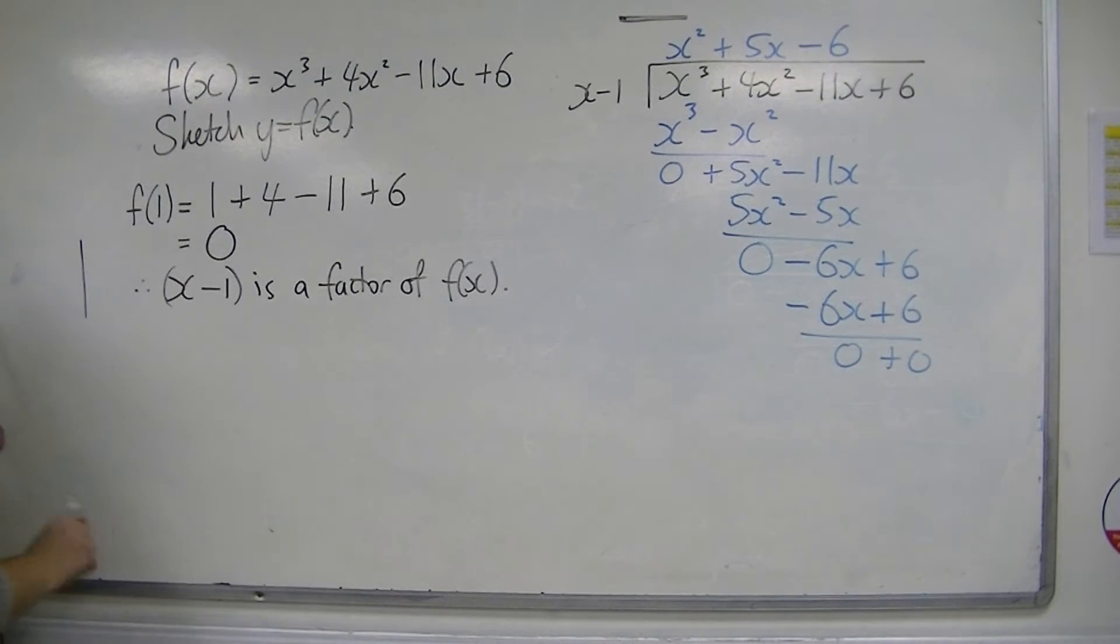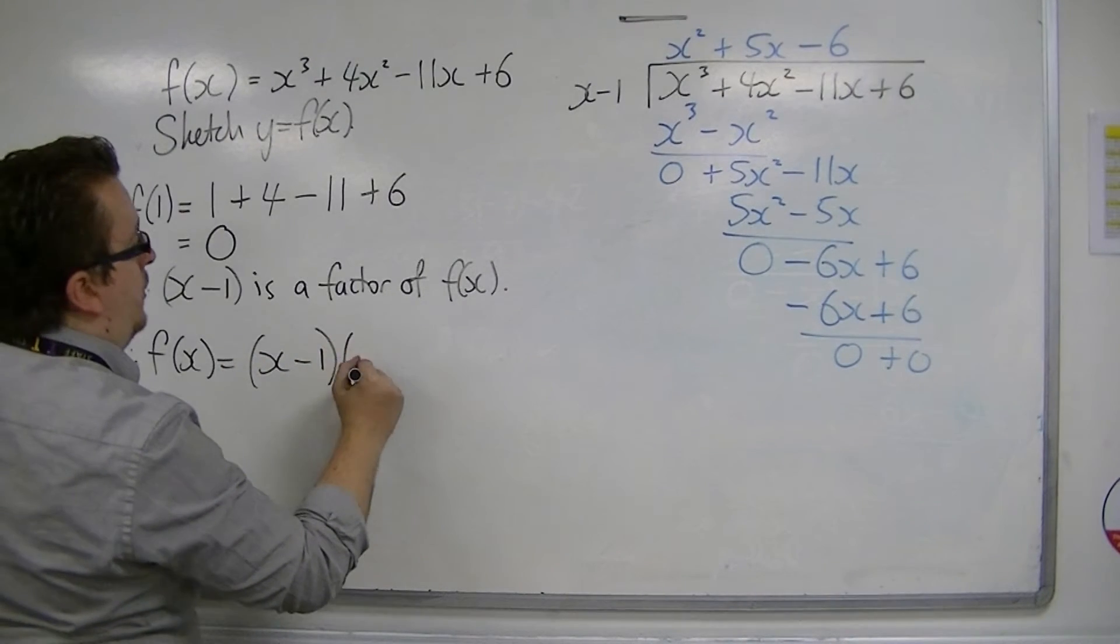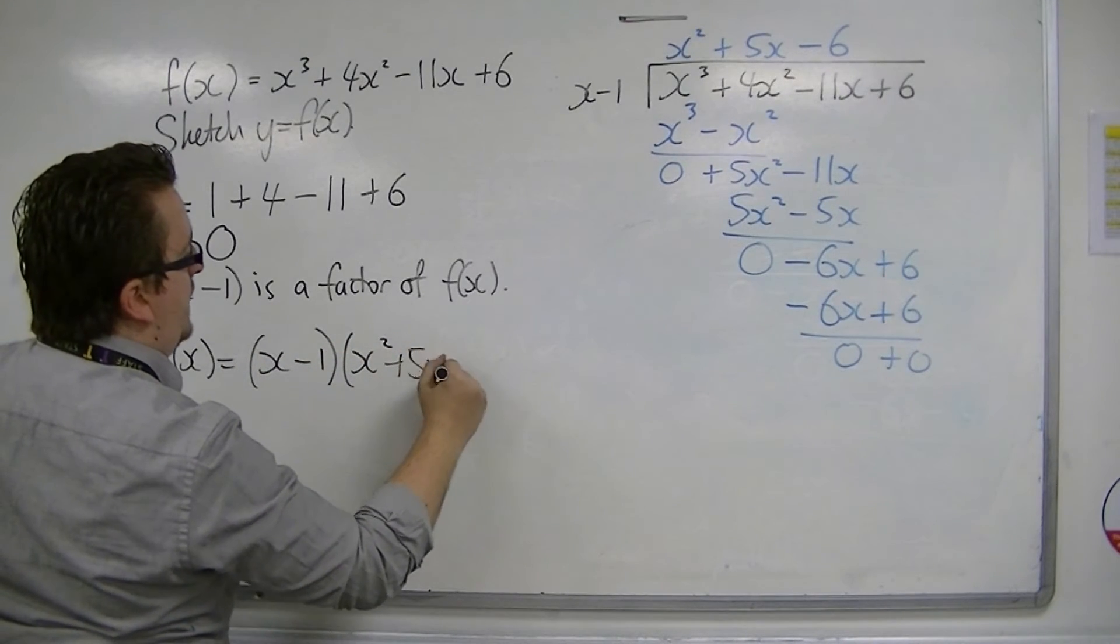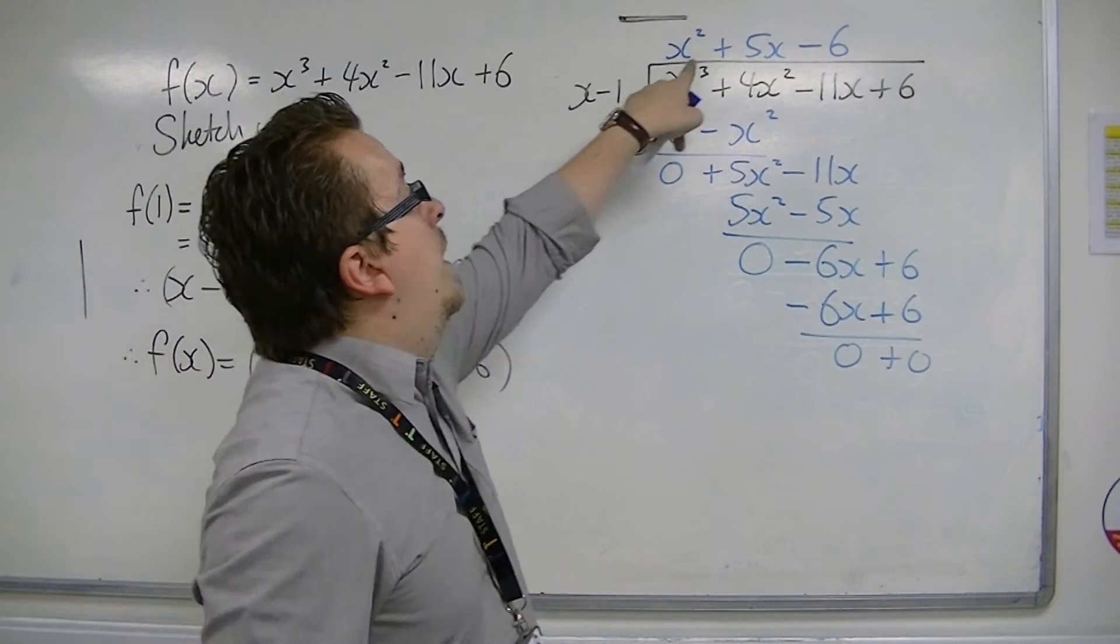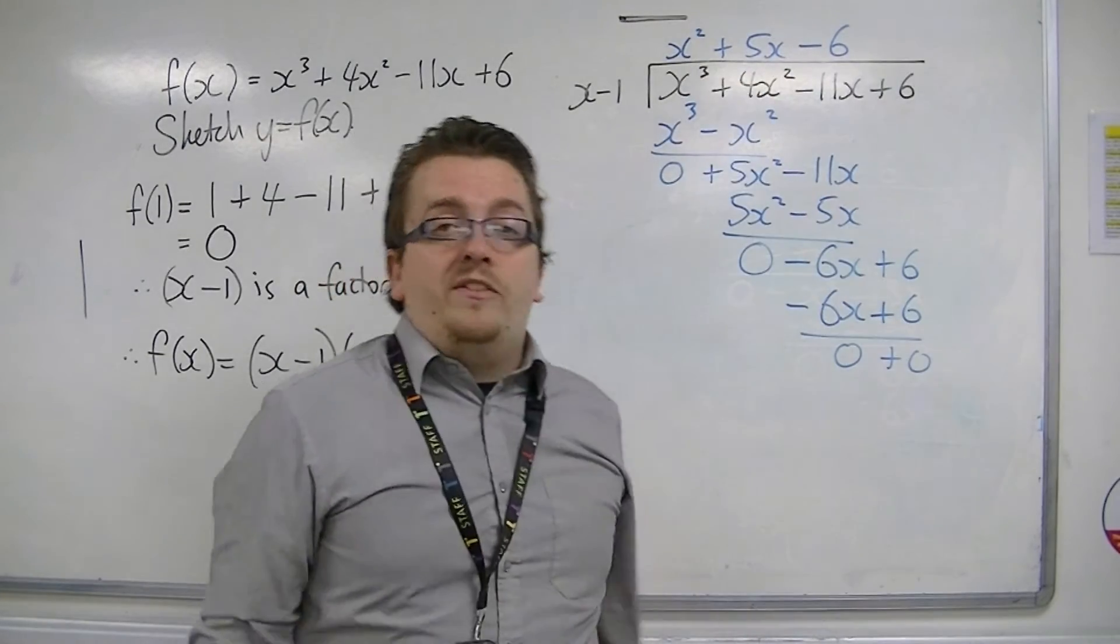So now we can say that therefore, f(x) is x - 1 times x² + 5x - 6. So the product of the x - 1 plus this quadratic term.